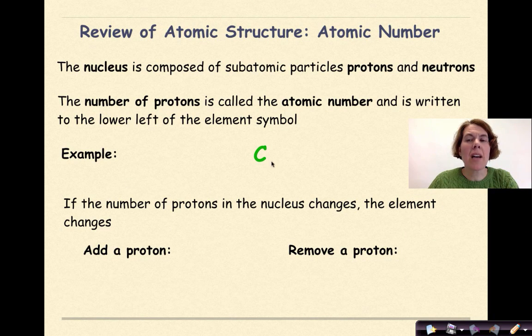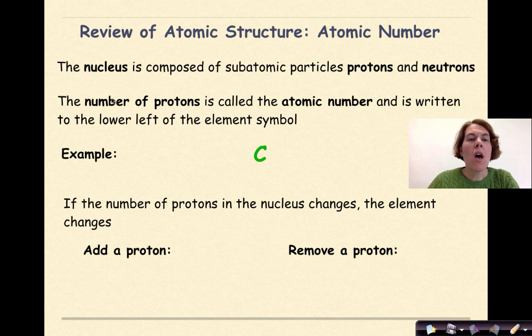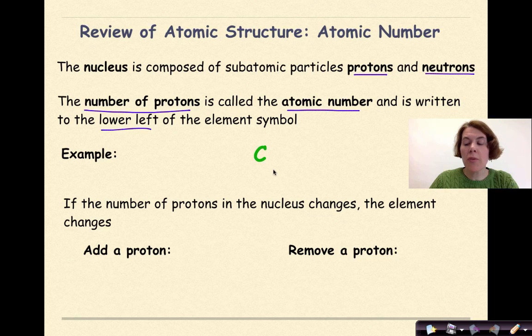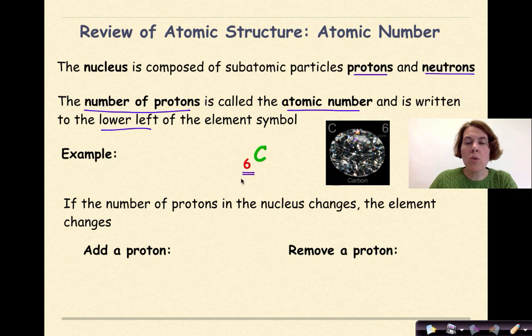Let's start out by talking about atomic number. The nucleus is composed of subatomic particles, protons and neutrons. The number of protons is called the atomic number and is written to the lower left of the element symbol. So here I have the symbol for carbon. The atomic number typically will be located in the lower left-hand corner. And a little visual of carbon as a diamond right here, one allotrope of carbon I could say.